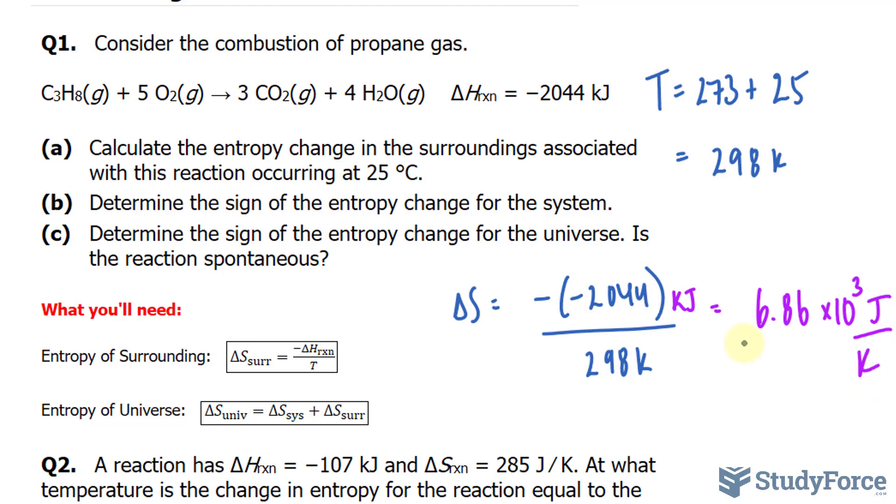In part B, they want us to determine the sign of the entropy change for the system. There's a little trick to determining the sign. All they're asking is whether it's positive or minus. Take a look at the reactants of this chemical equation. We have 6 total moles of these molecules, and in the product side, we have 7.